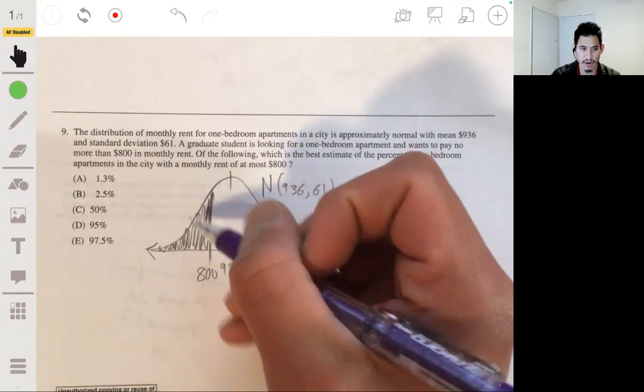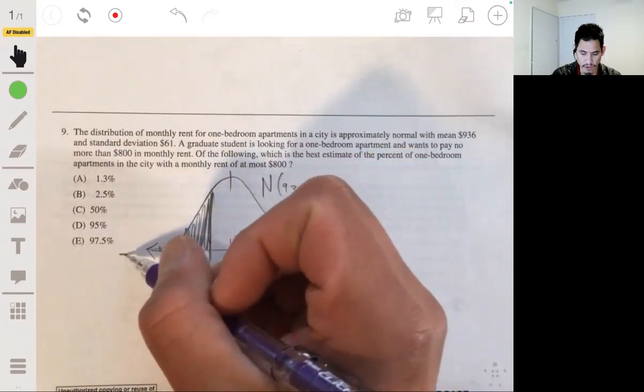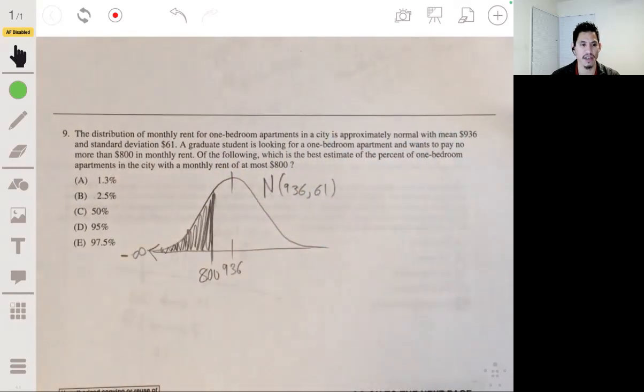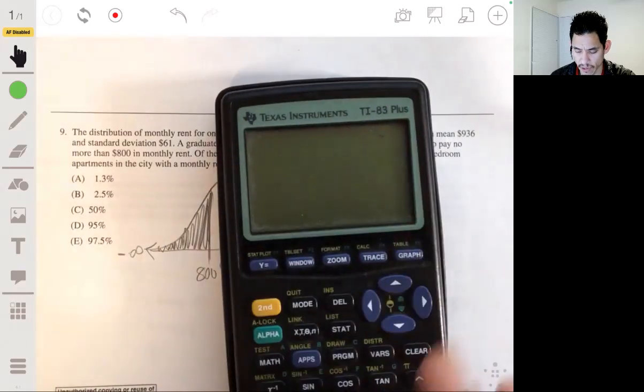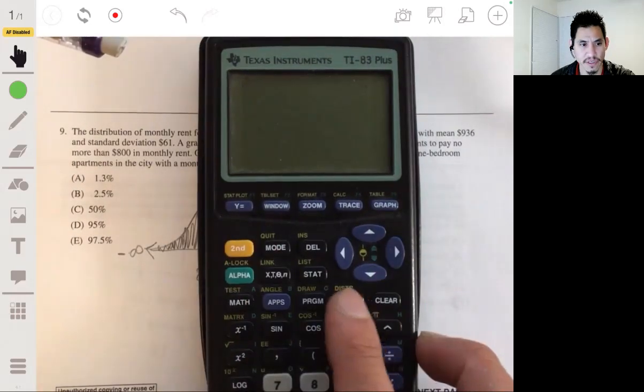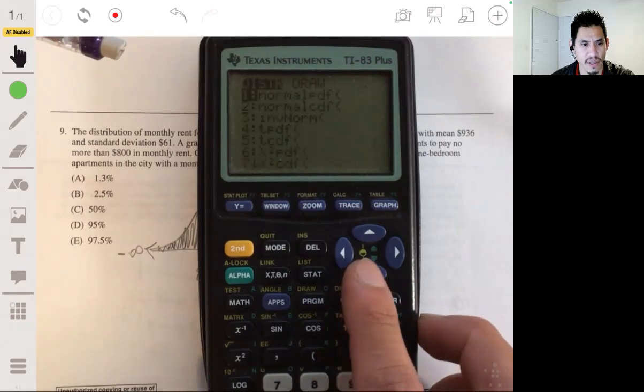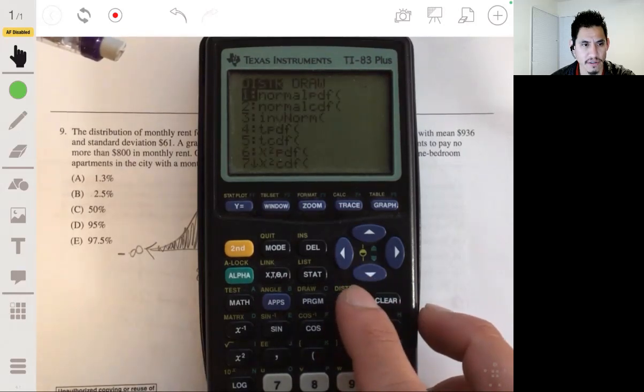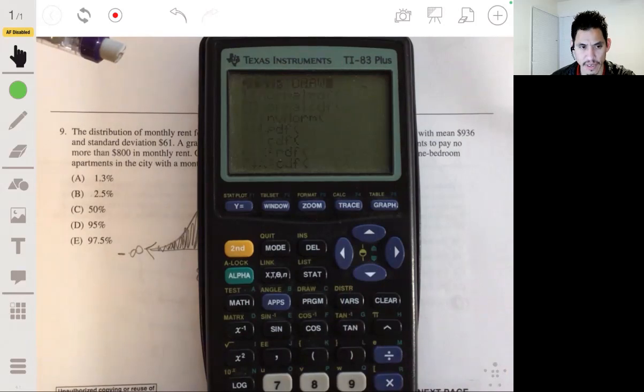So 800 and below. We want to find essentially this area. So think of it as going from negative infinity to 800. So for this, you can calculate a Z score, use your table, and do all that. But the quicker way, just use technology. Go to the distribution function in your calculator. Go to vars or distribution, technically. Go to the distribution, Normal CDF.